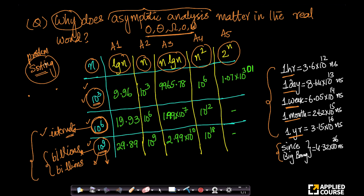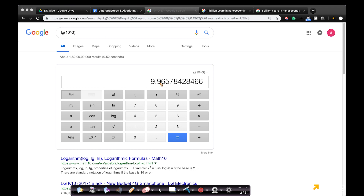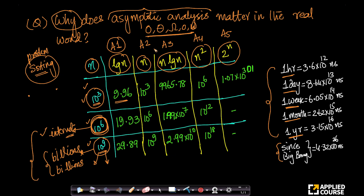For algorithm A1 with log n time, if I have an input of size 10 power 3, log n will be 9.96. If my input is 10 power 6, my log n would be 19.93. You can compute these by just using Google — type 'lg 10 power 3' and you get log base 2. These are the number of operations I have to perform asymptotically speaking — roughly about 10 operations to solve my problem if the input size is 10 power 3 using algorithm A1.